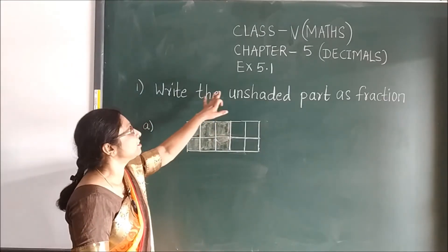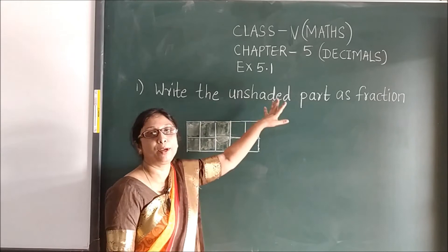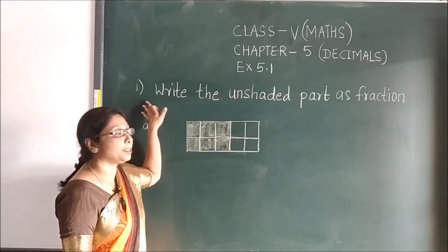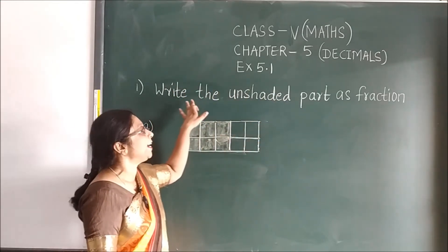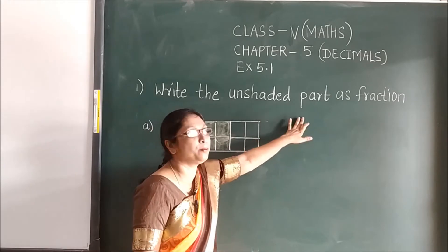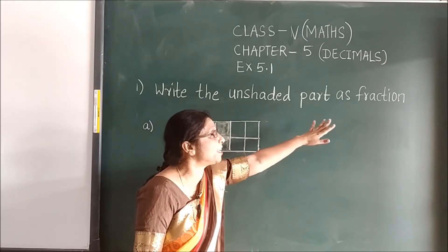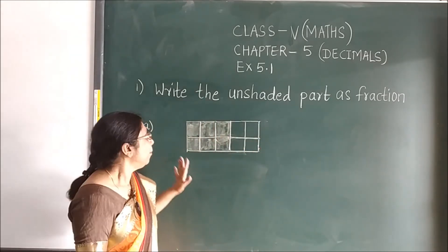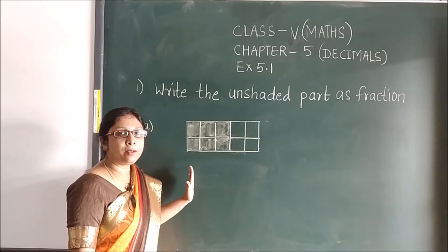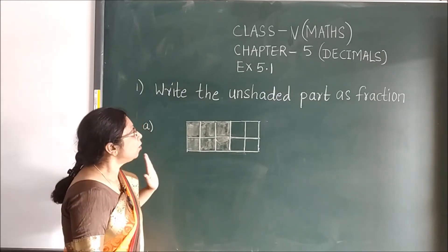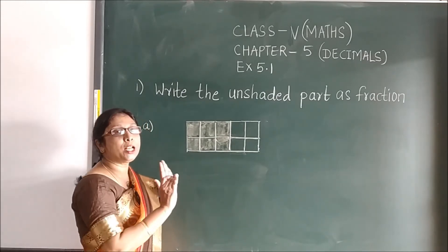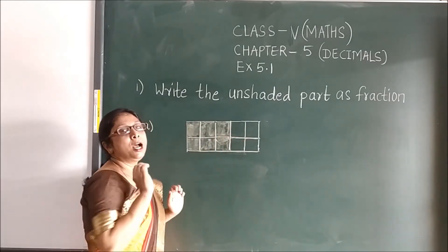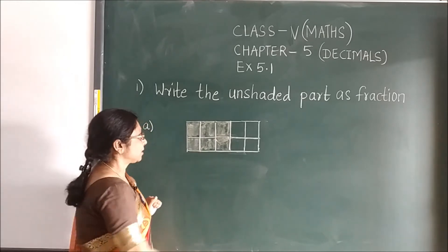Now in exercise 5.1, children will see the first question: write the unshaded part as a fraction. Now here you can see the figure. First, you can calculate all the parts.